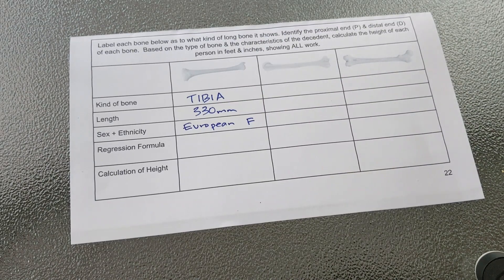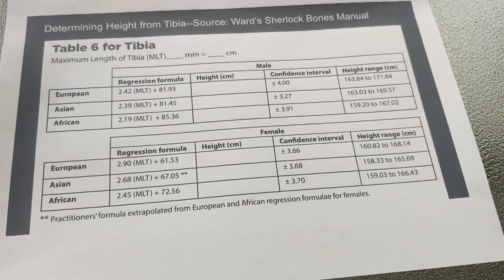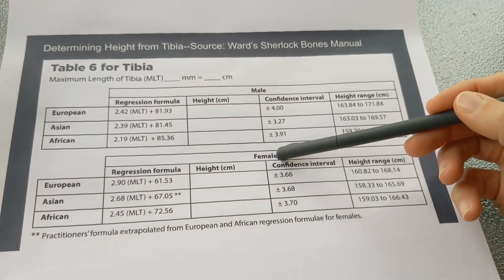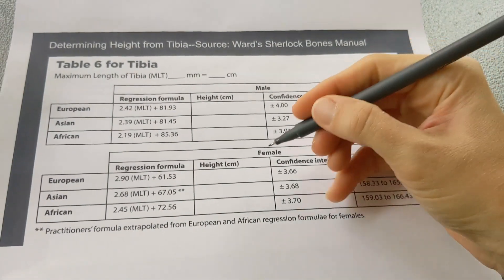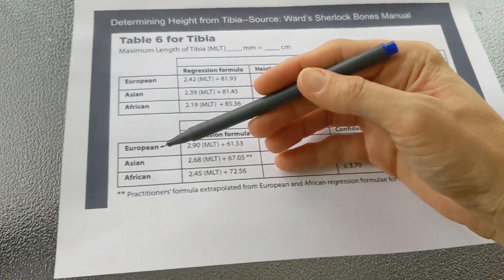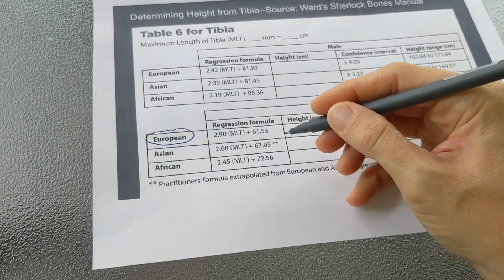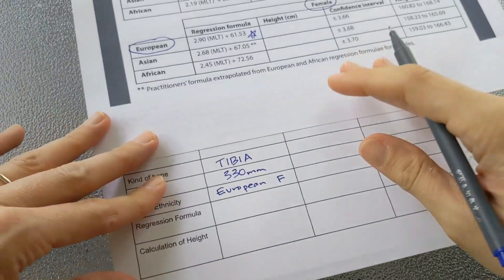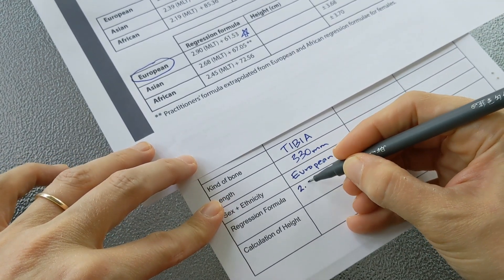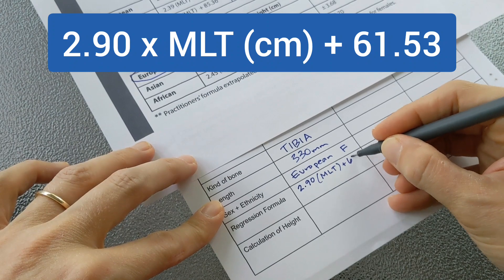Then we have to figure out the regression formula. I am using a table from Sherlock Bones — Wards has a really cool kit called Sherlock Bones and they have a table for the tibia. I know that I have a female, so I'm going to circle female. And I know that the female is European, so I'll circle that. From those two selections, I get my regression formula, which I'll copy onto my handout.